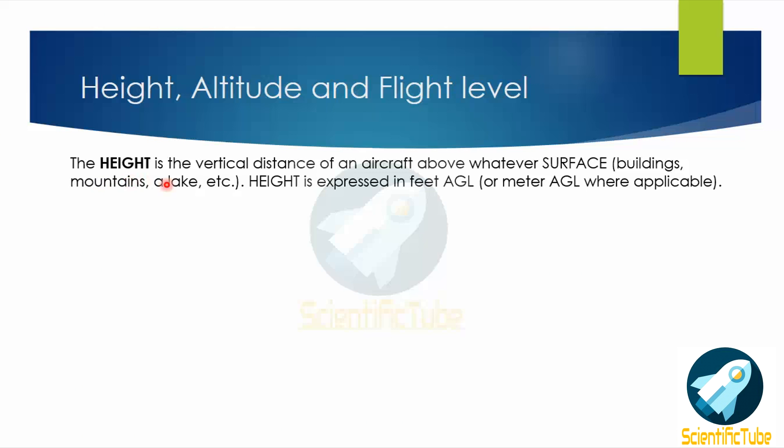First we will speak about height, altitude, and flight level. Height is the vertical distance of an aircraft above the surface — whatever the surface may be, maybe buildings, mountains, or a lake. It is generally expressed in feet above ground level, and in some countries it may be expressed in meters also.